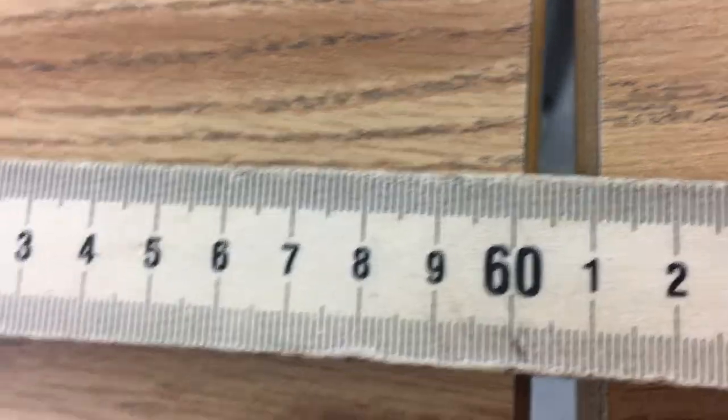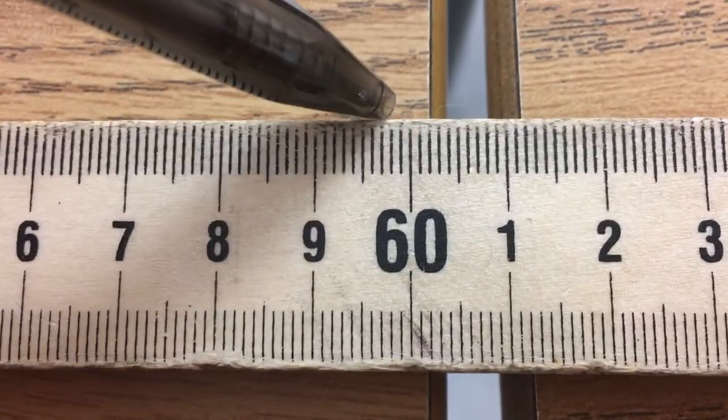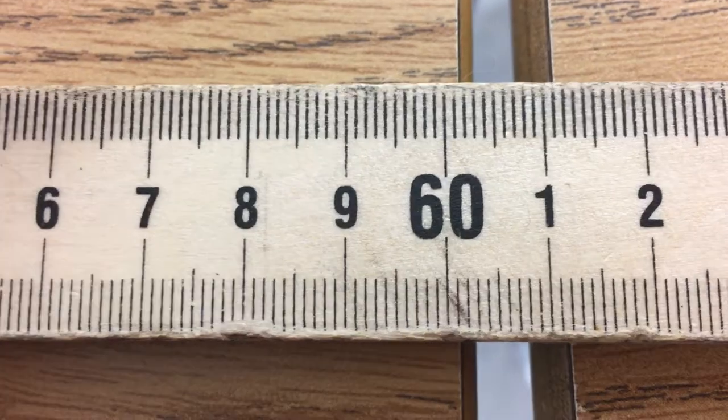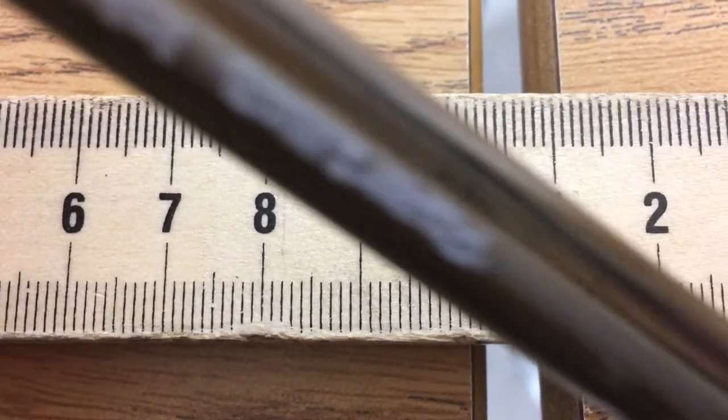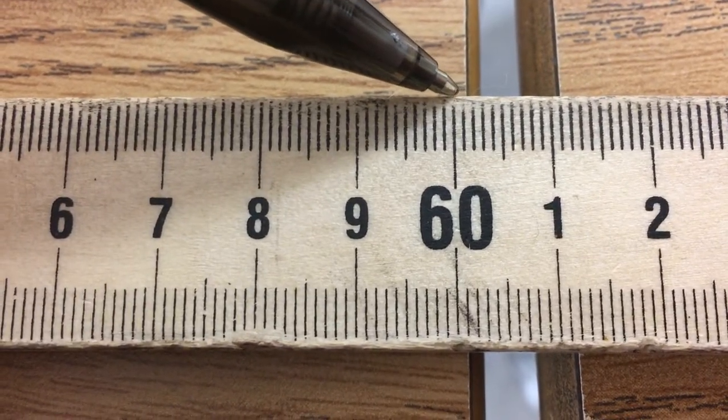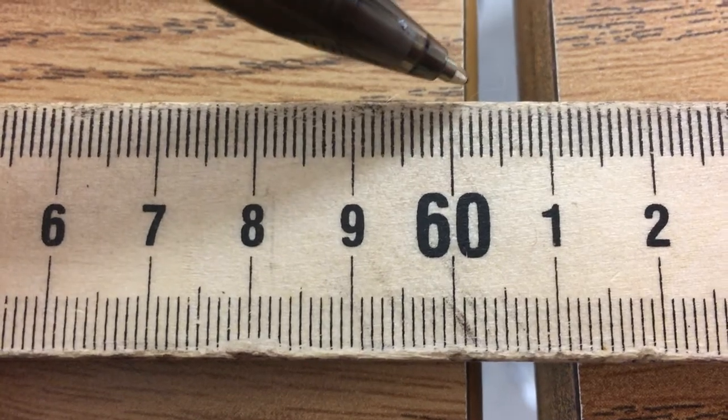So we are at the end of what we're measuring. And if you notice, we're between 60 and the number 1. So we're between 60 and 61. So what I'm going to do is I'm going to take my pen, my handy-dandy pen, which you can see here, and I'm just going to count over each time because between 60 and 1 are decimal points.